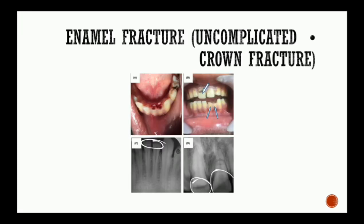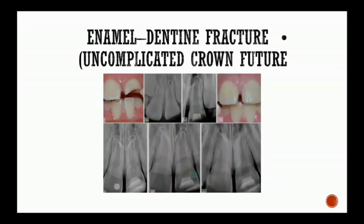Enamel fracture is a completed crown fracture with loss of enamel only. Enamel-dentine fracture is a completed crown fracture with loss of enamel and dentine.